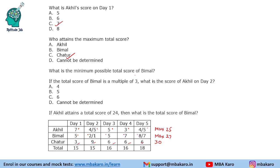What is the minimum possible total score of Bimal? Taking the minimum values, Bimal's minimum is 25. The score range for Bimal is 25 to 27 and for Akhil is 23 to 25. If Bimal's total score is a multiple of 3, Bimal scores 27, and on that occasion Akhil will score 23 — that is his least score. His score on day 2 in that case will be 4.